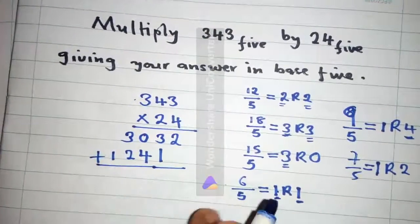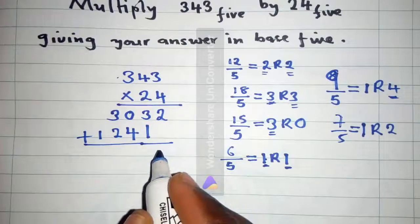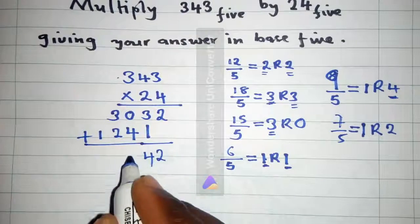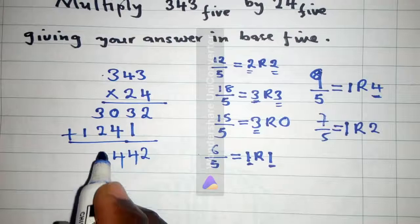Then we put our line here, it's a plus. 2 plus 0 is 2. 3 plus 1 is 4. 0 plus 4 is 4. 3 plus 2 is 5. 5 is bigger than 4, so we cannot write it, we divide.